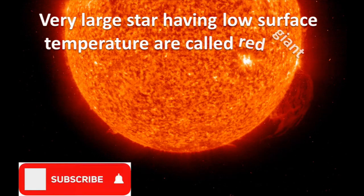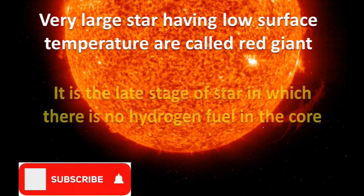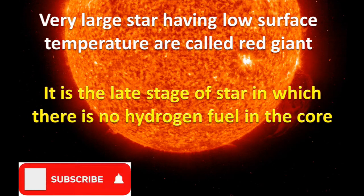Very large stars having low surface temperature are called red giants. It is the late stage of a star in which there is no hydrogen fuel in the core.